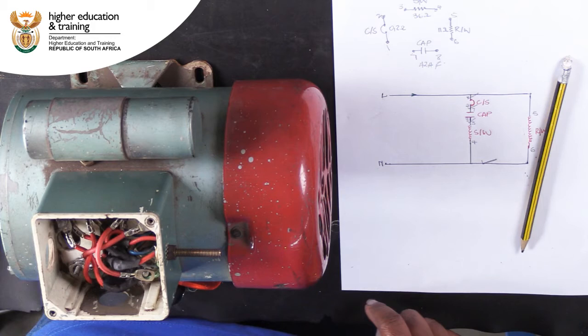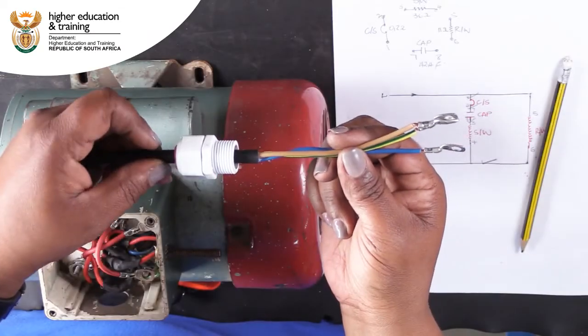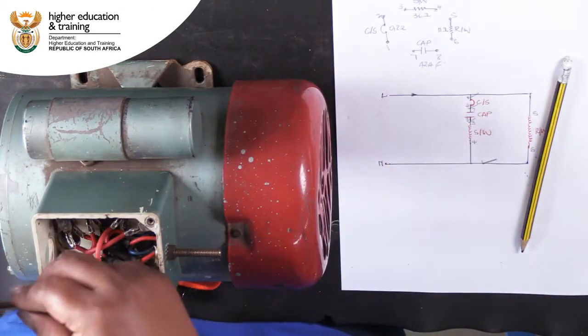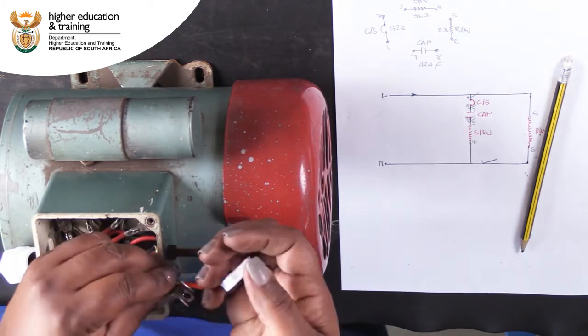We will also need to connect earth to the motor frame. Here, we have our supply lead already glanded. We need to secure it into the terminal box.